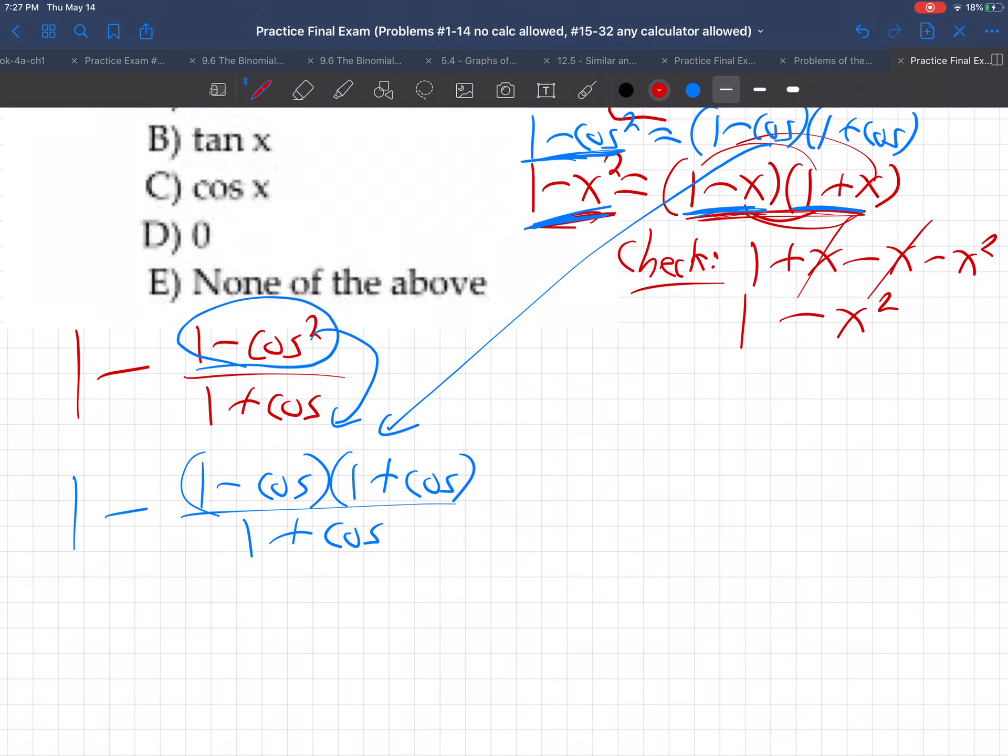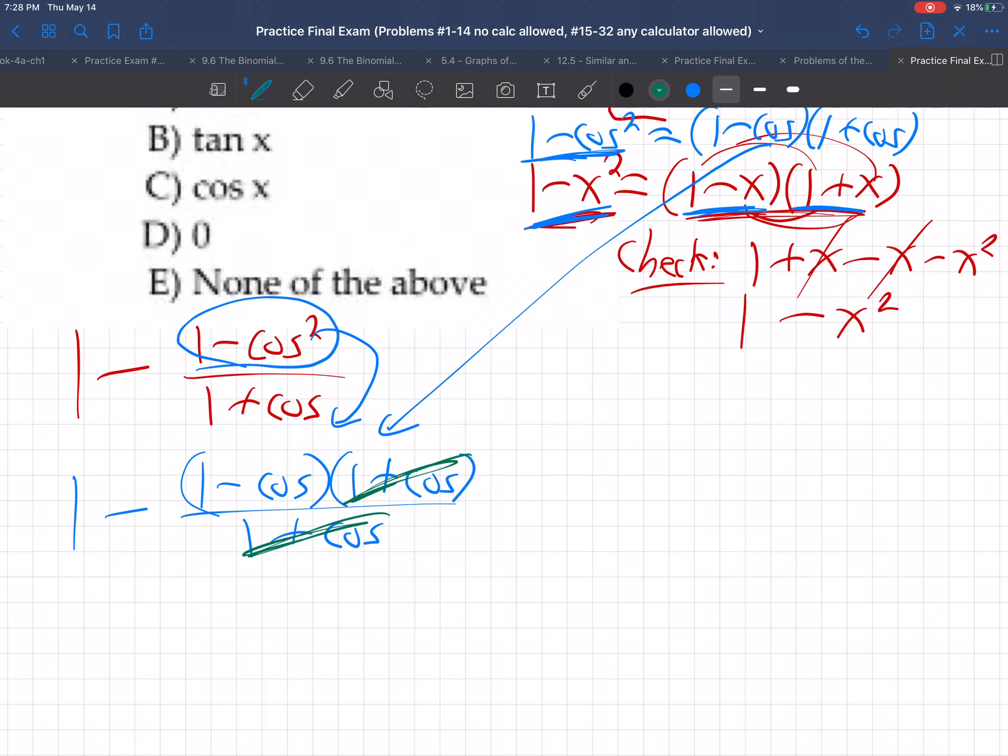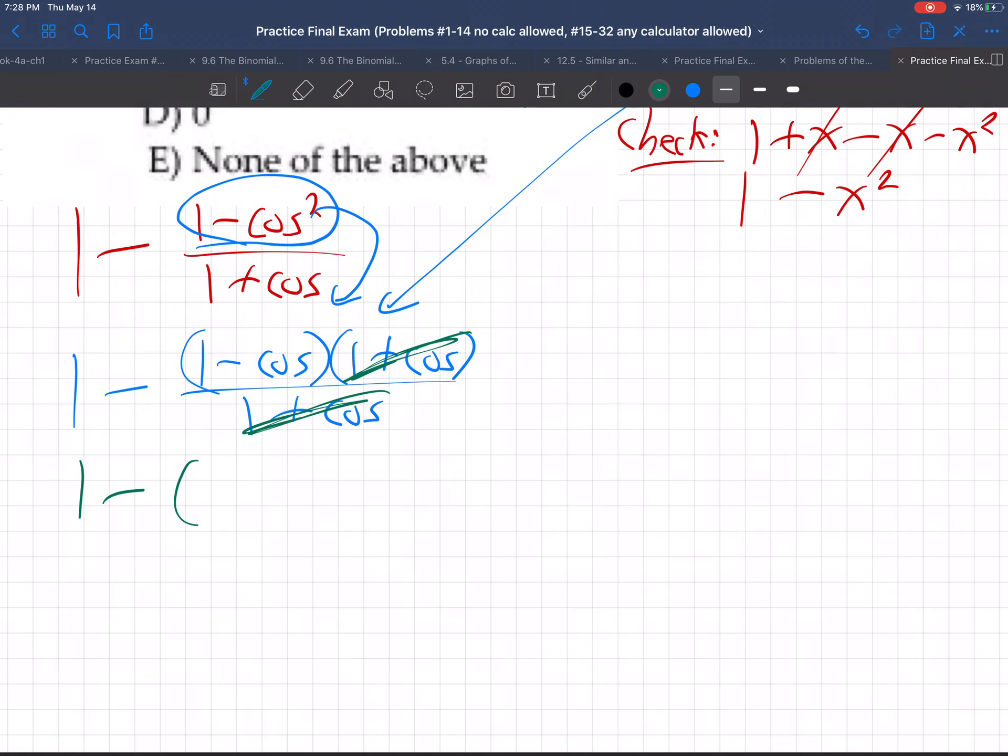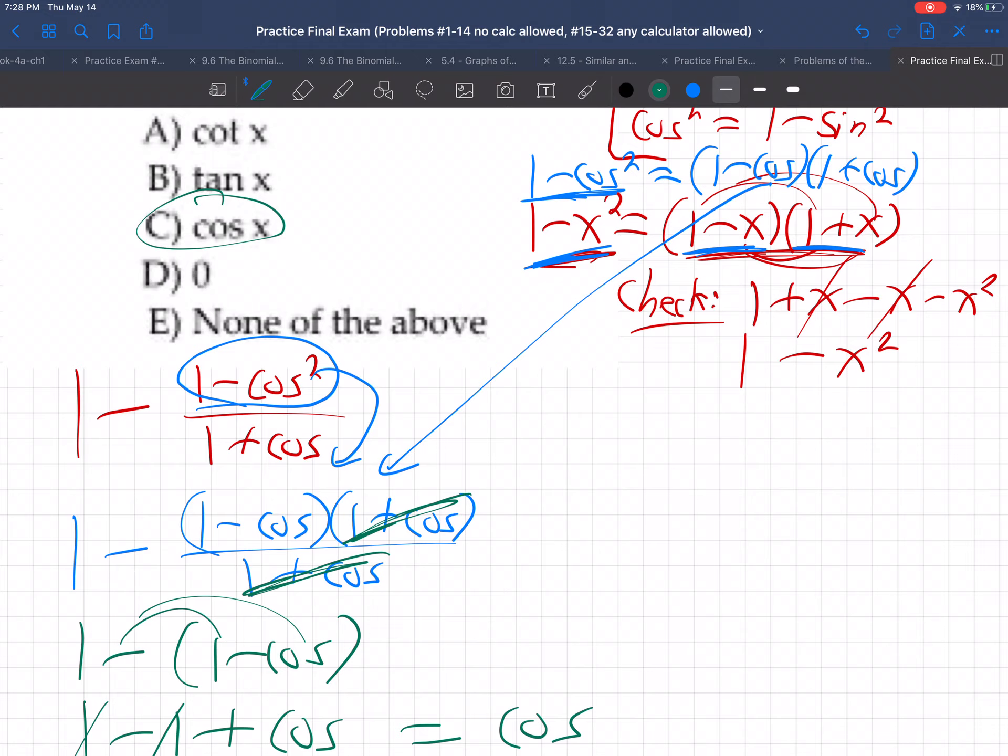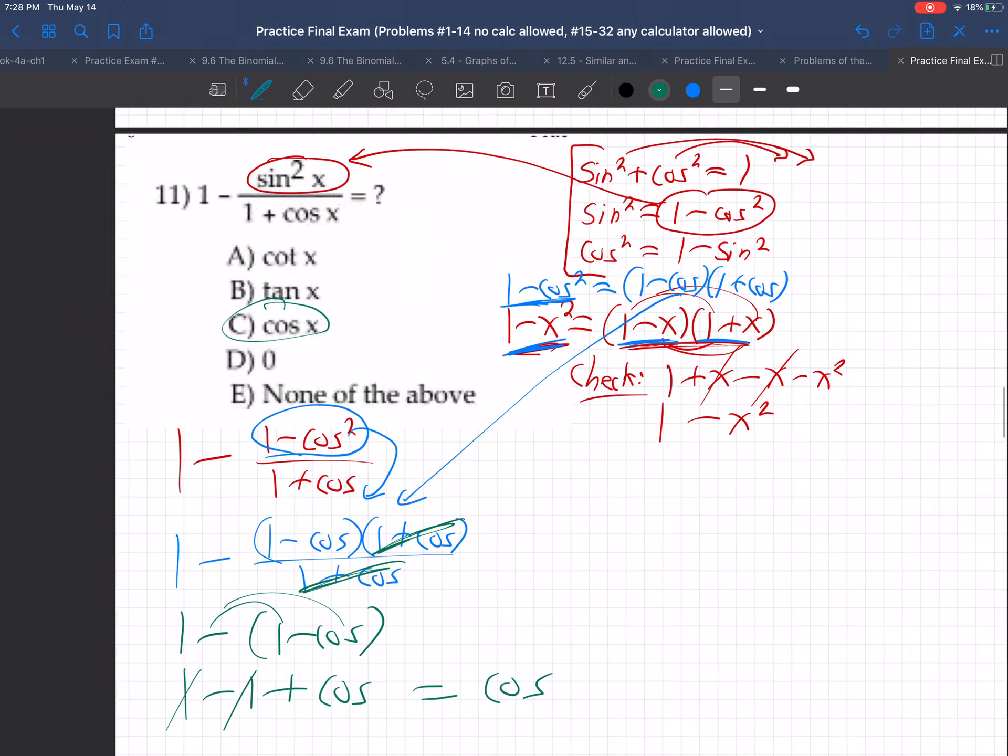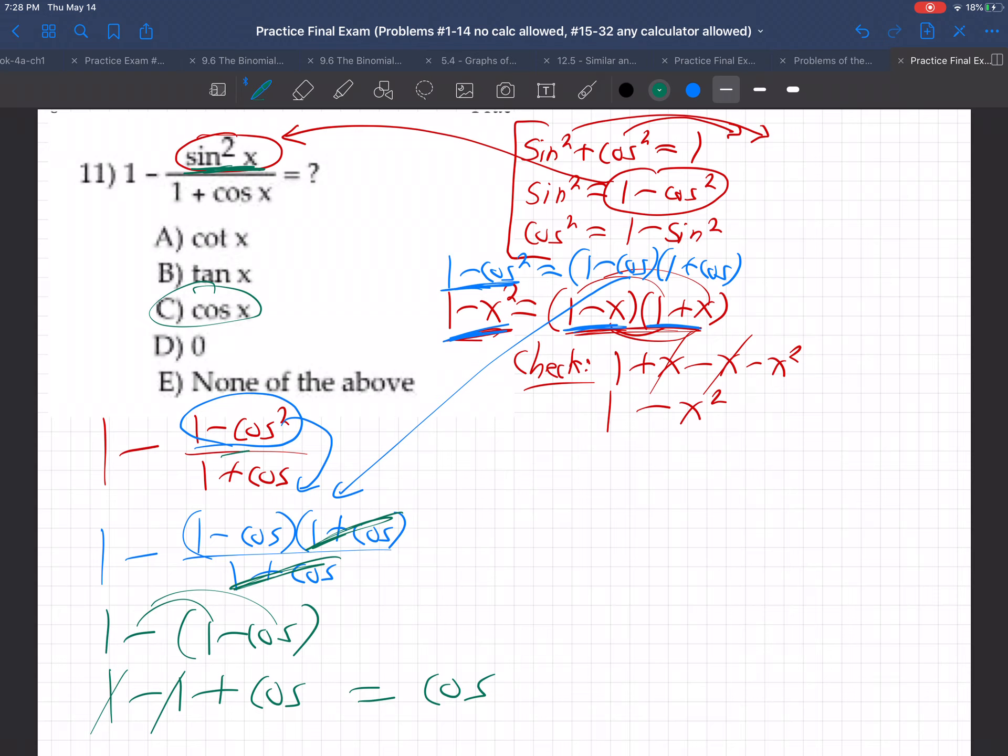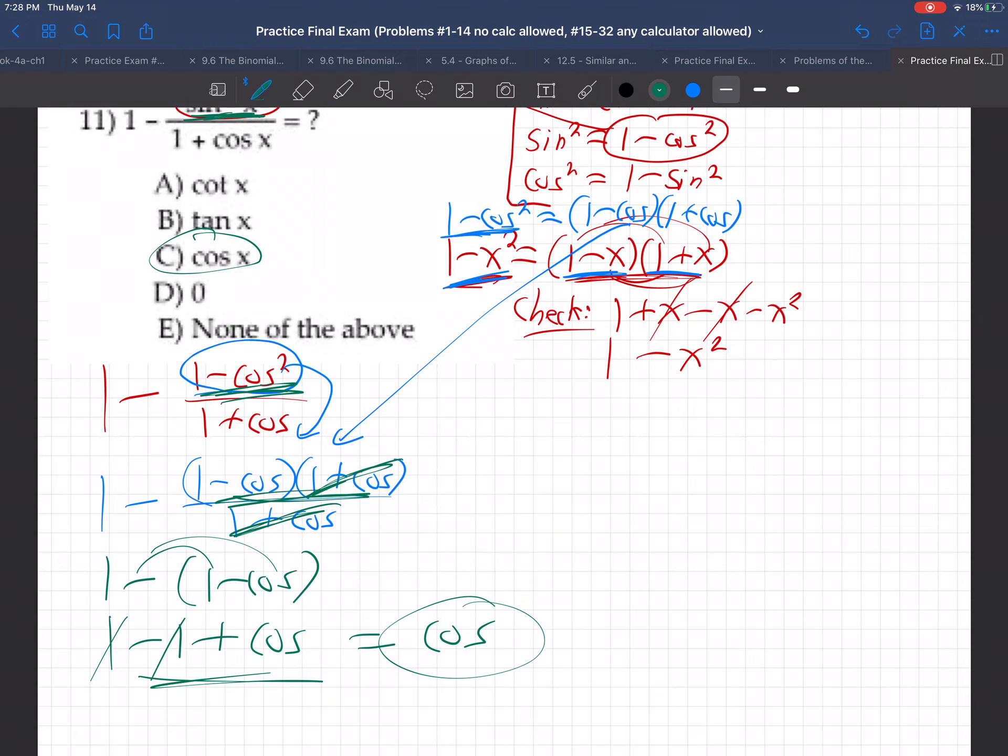Okay, now why am I doing that? Because I can see what's going to happen. See how this and this cancel now? So we get 1 minus, 1 minus cosine, and then the minus distributes, changes both signs. 1 minus 1 is gone. It's just cosine.